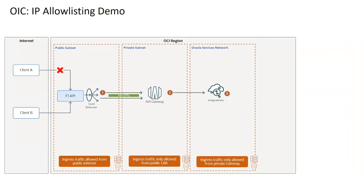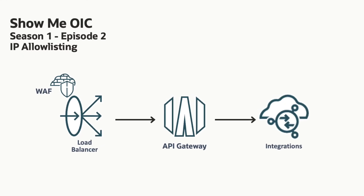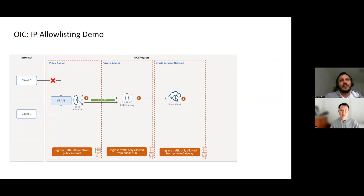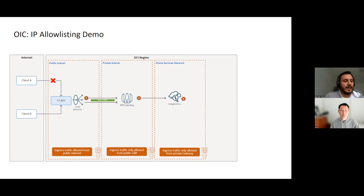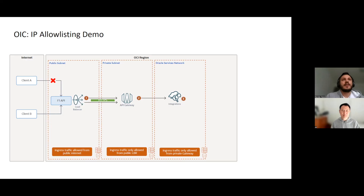Just as a recap, there are a number of different options we presented today. Each option has a little bit more detail around setup that we haven't talked about, but they're all doable and it really just depends on what customers are trying to achieve. One of the things we want to cover in a future video is JWT token validation — that could be another video we do in the future.